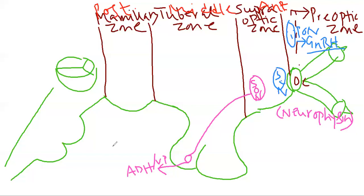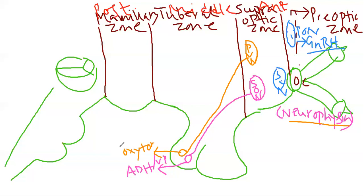The other nucleus in the supraoptic zone is the paraventricular nucleus. This paraventricular nucleus also releases neurophysin via the neurohypophysial tract, producing oxytocin from the posterior pituitary. Oxytocin is very important for milk ejection from the mother's breast during feeding, and during delivery it contracts the uterus during the third stage of labor so that the baby can come out easily.